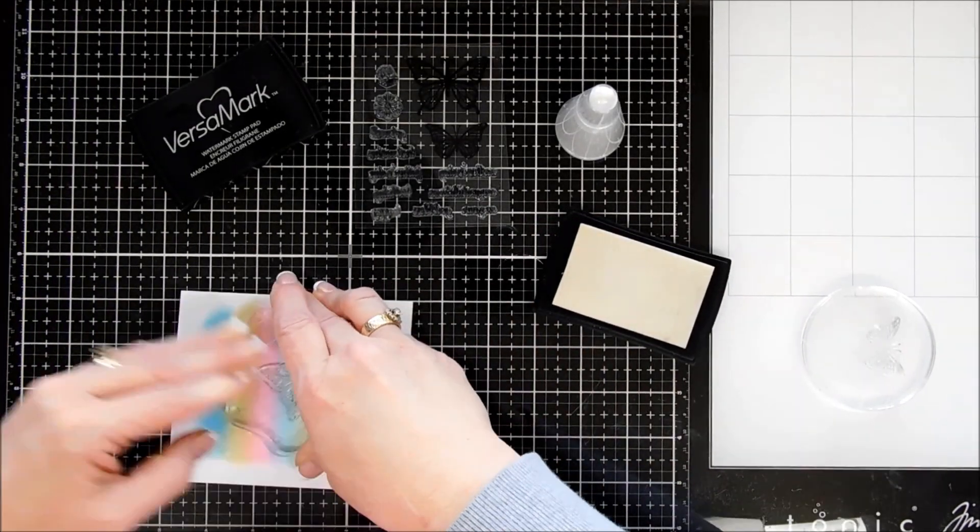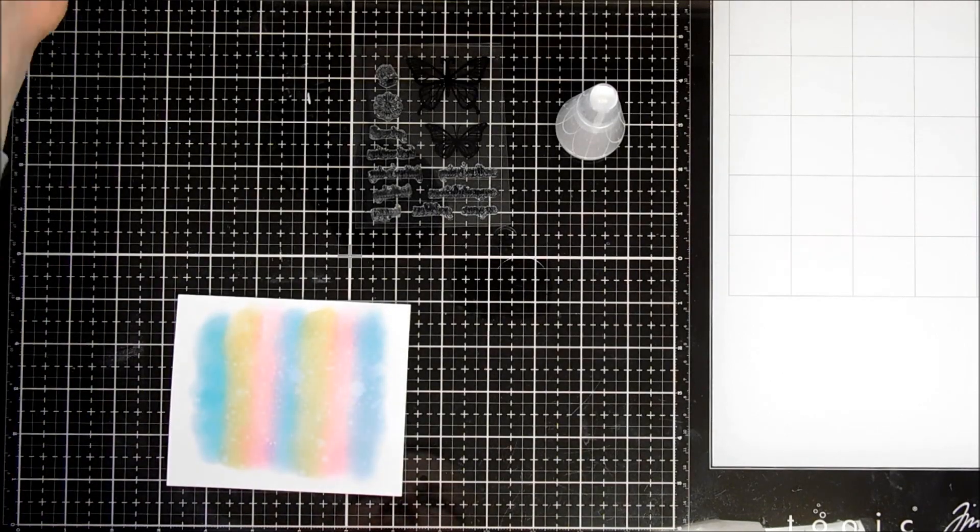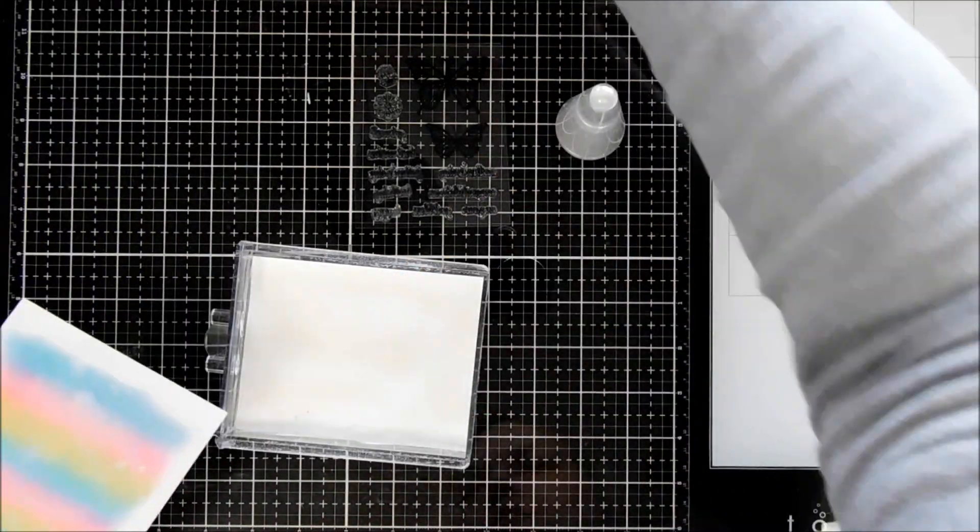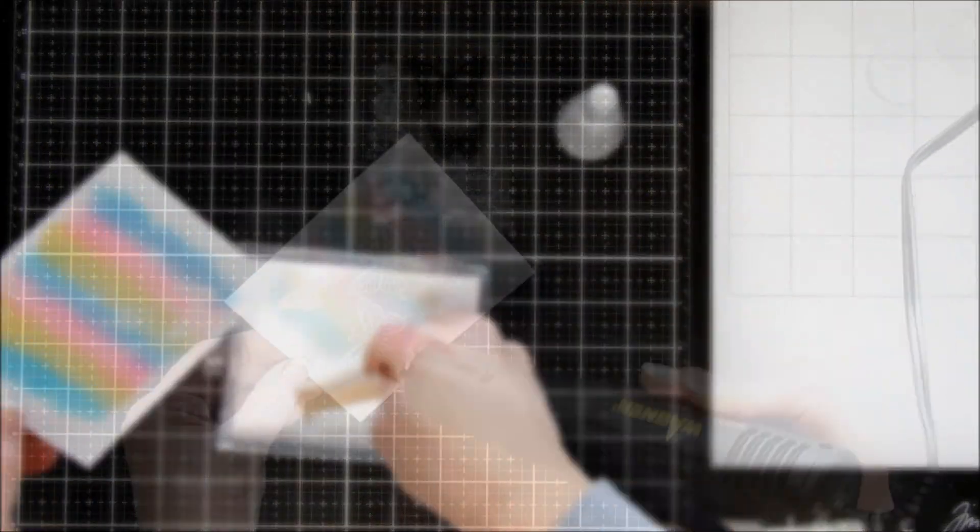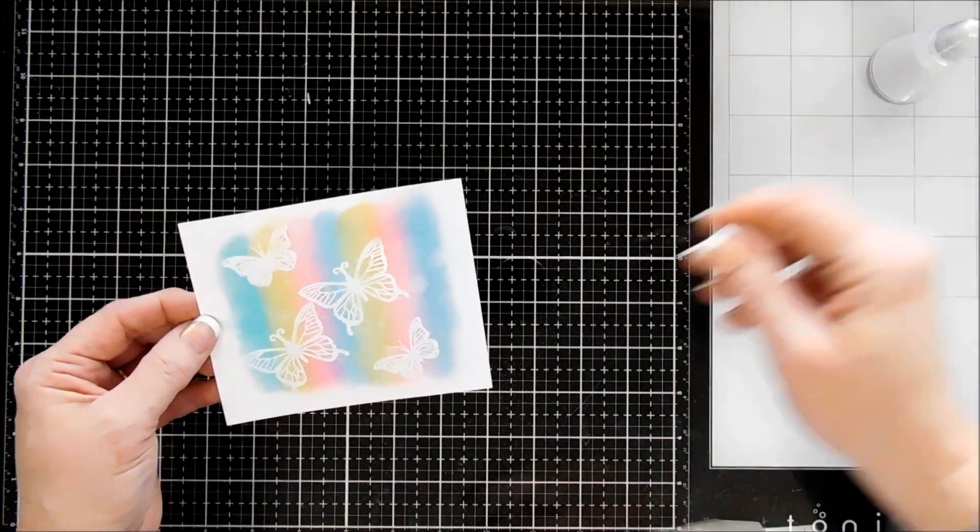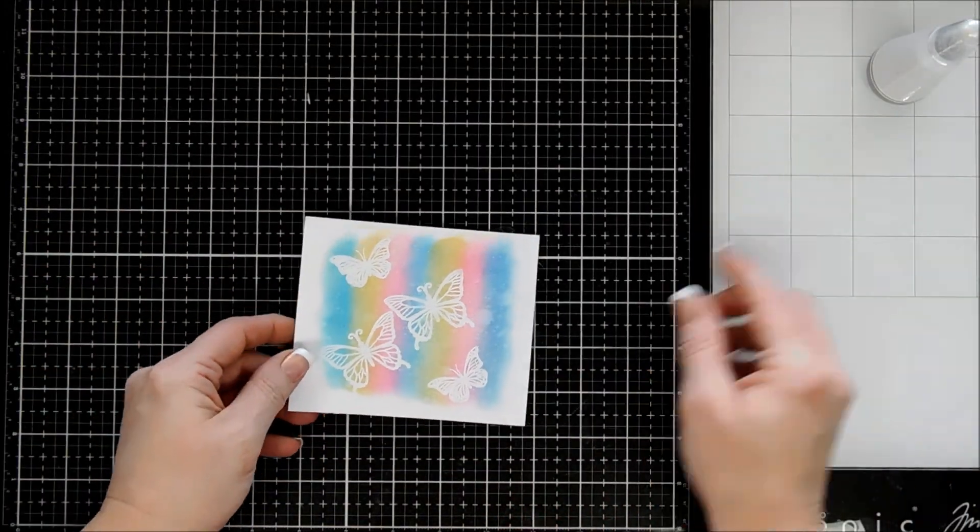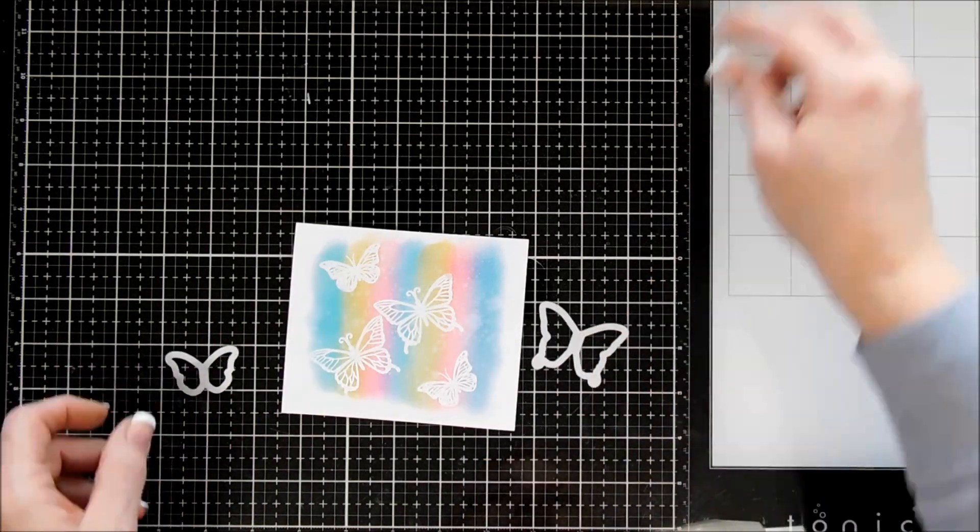Now I couldn't see where I was stamping so I had to tilt it a little bit. But four butterflies in total, two small and two large. I'm going to go over my butterflies with my white embossing powder and I went ahead and melted that and our butterflies are ready to go.